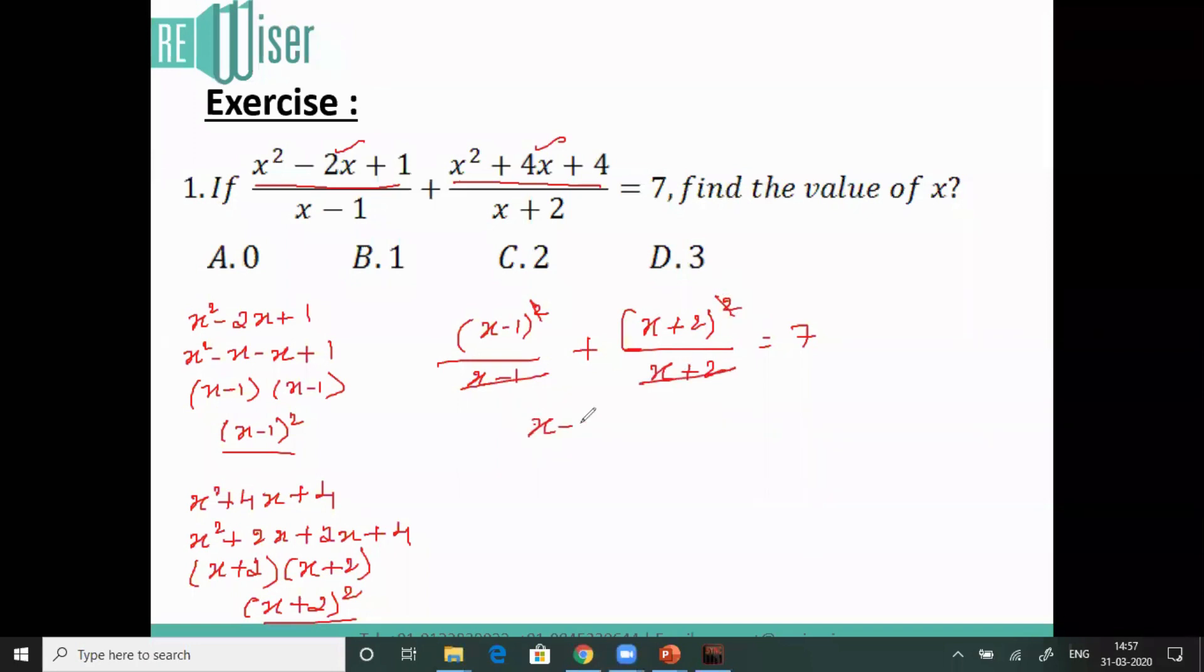I will be left with x minus 1 plus x plus 2 equals 7, which means 2x plus 1 equals 7. When 1 goes to the other side, it will be 2x equals 7 minus 1, which is 6. So x is 3.